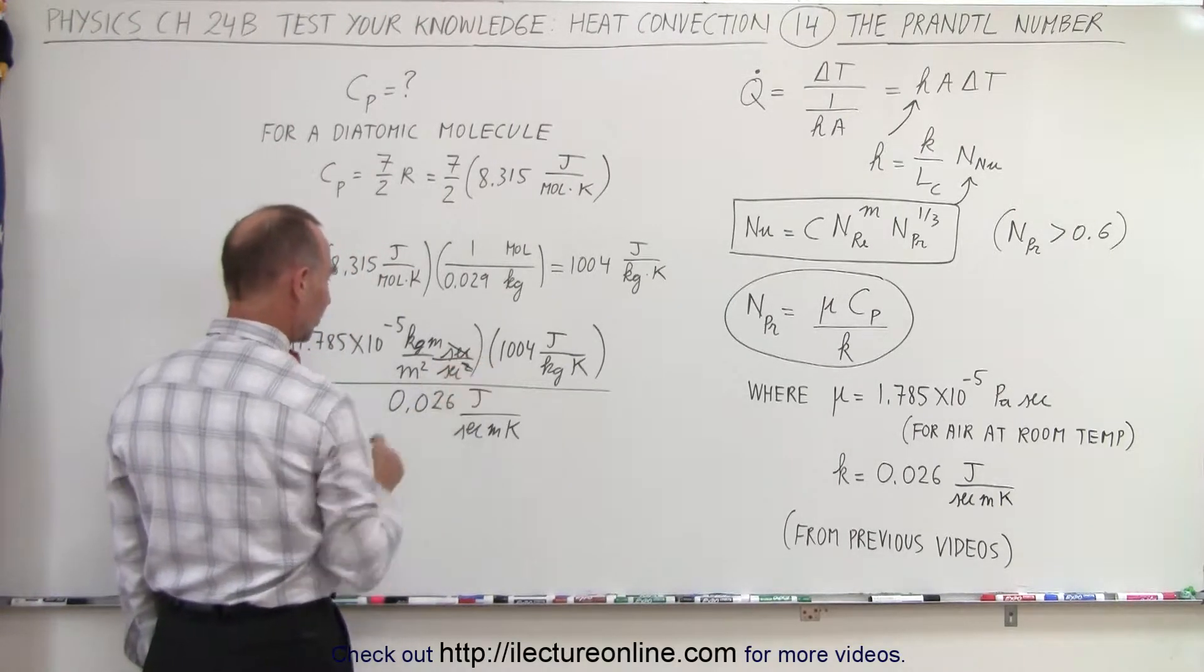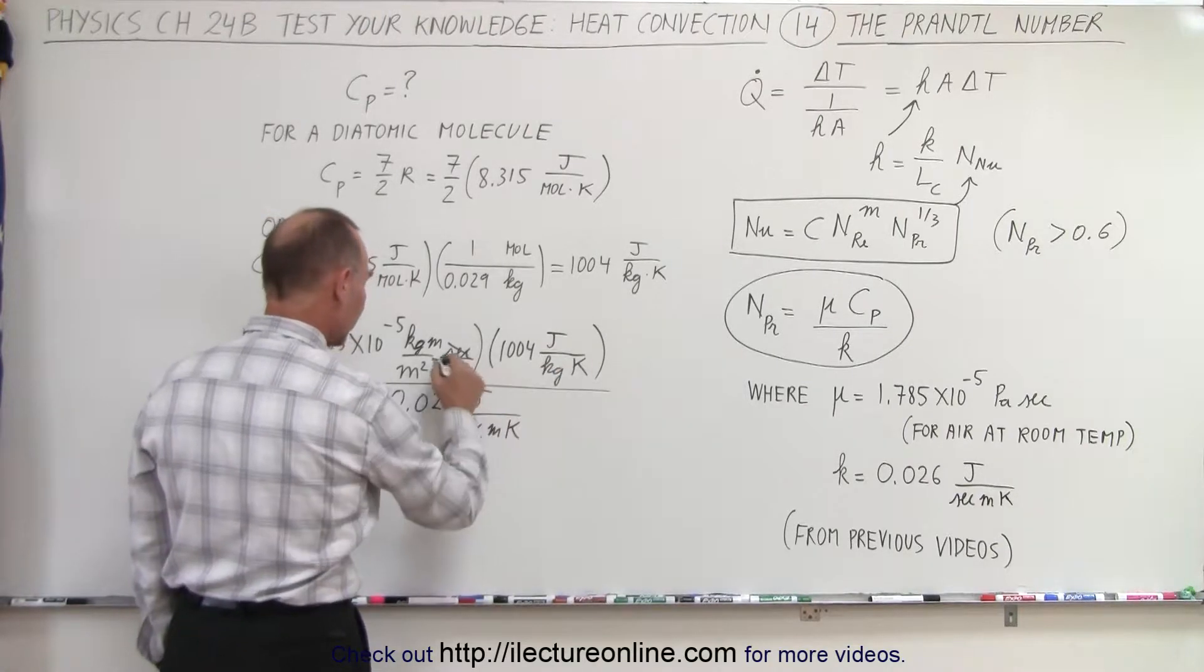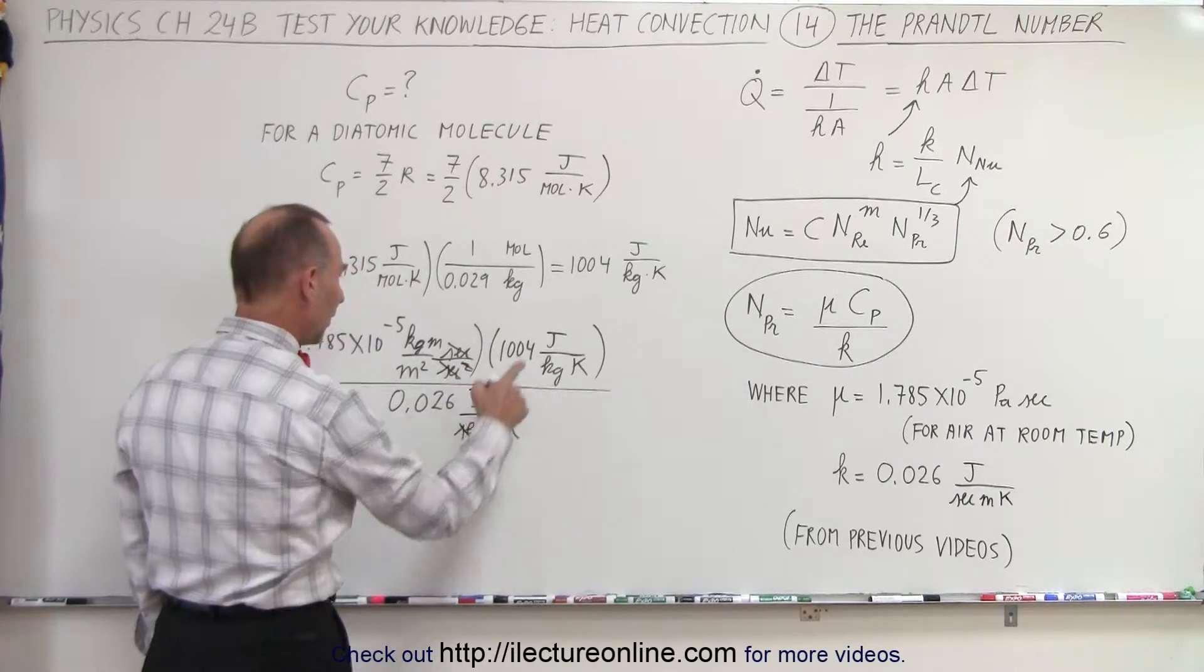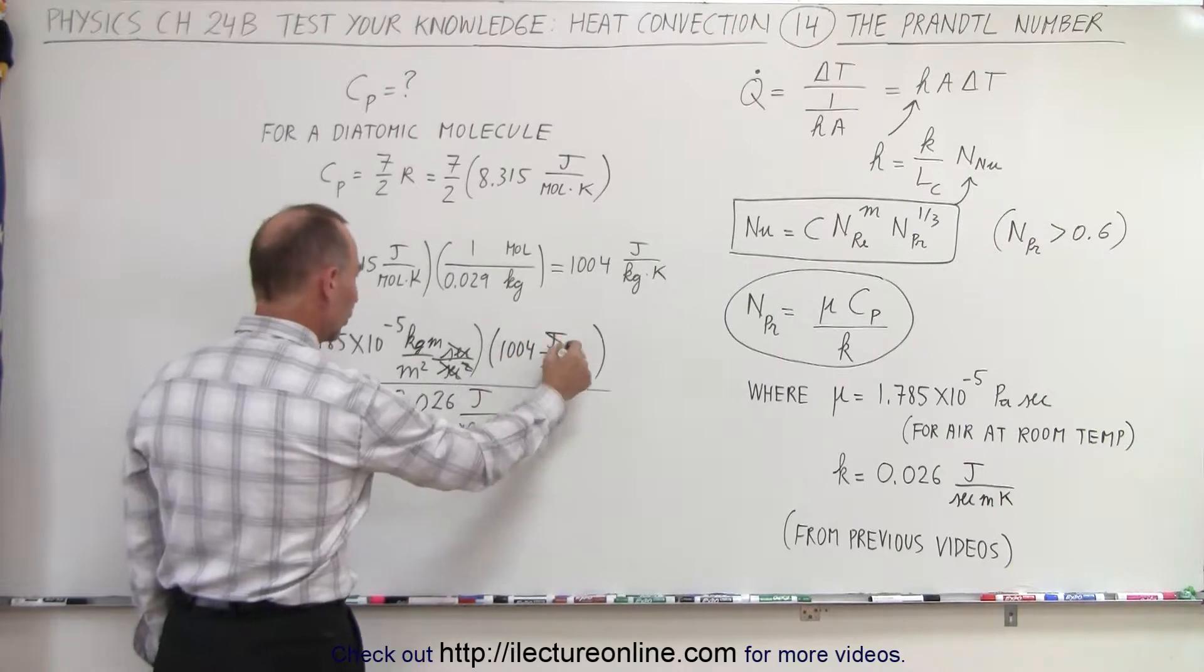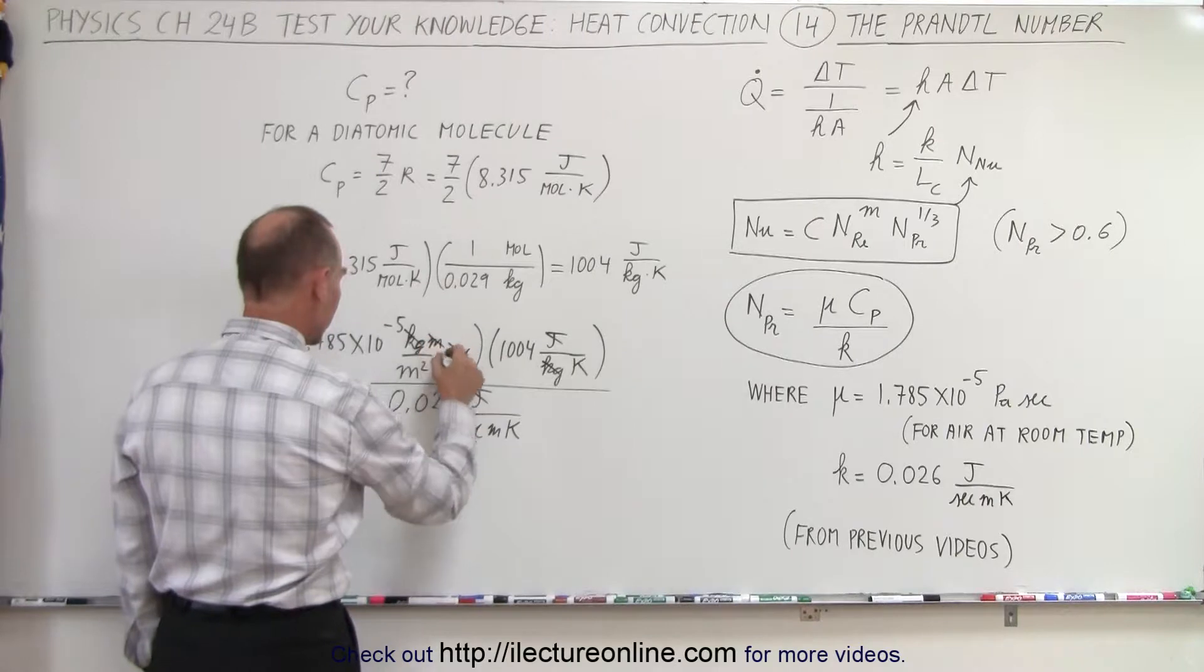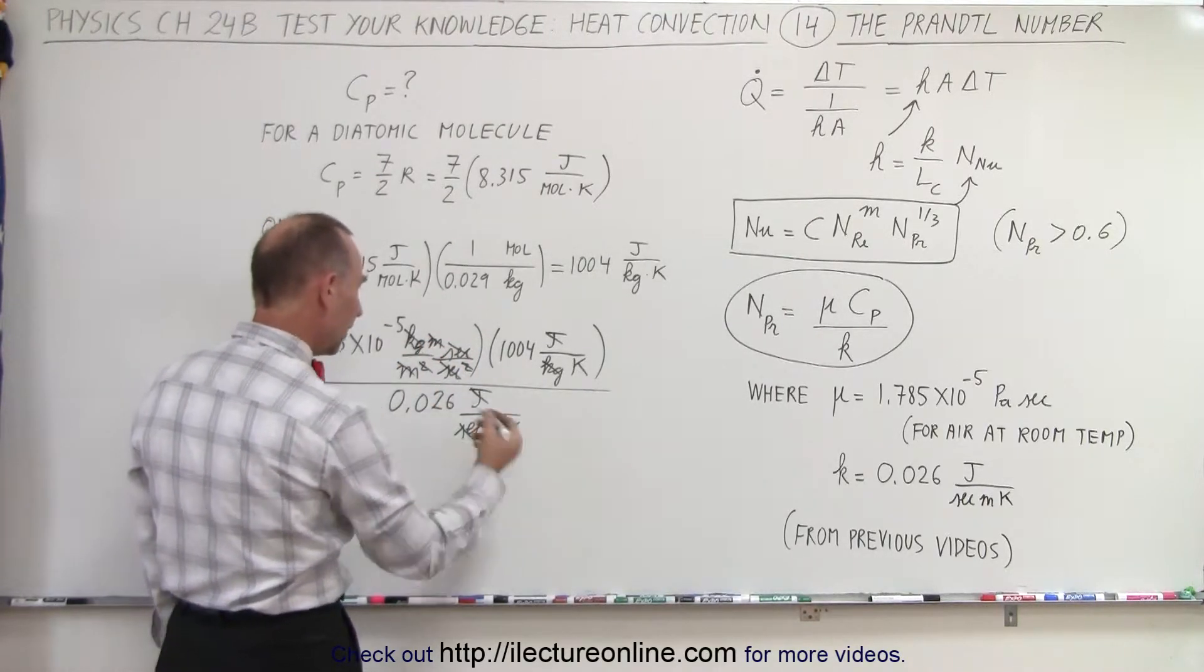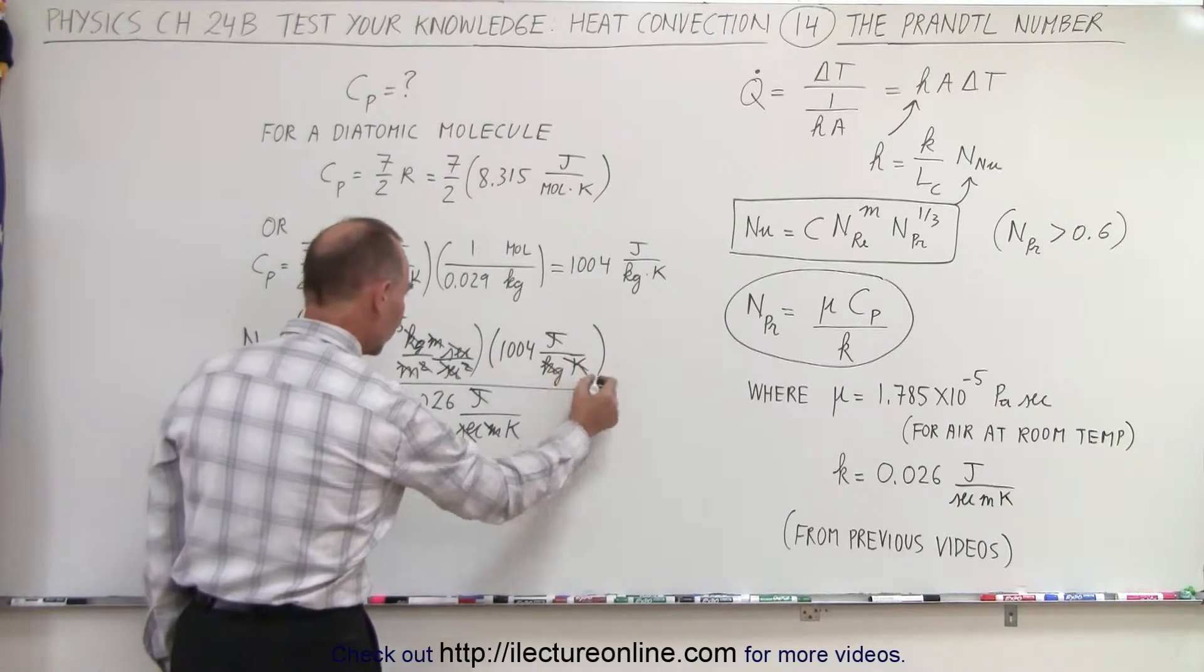We have one second and a second squared. We have a second in the denominator and a second in the numerator here. So that cancels out. We have a joule and a joule. Those cancel out. We have a kilogram and a kilogram. That cancels out. A meter and a meter squared. This meter and that meter cancels out. And then finally we have a K and a K. Those cancel out.